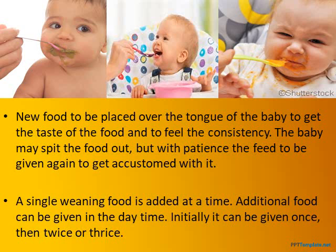When we put food on the child's tongue, we need to observe the taste and consistency. Sometimes the child may spit out or vomit — don't worry about these things, because new things are happening. Be patient while weaning. A single weaning food is added at a time. Additional food can be given in the daytime initially — once, then twice, and then three times.